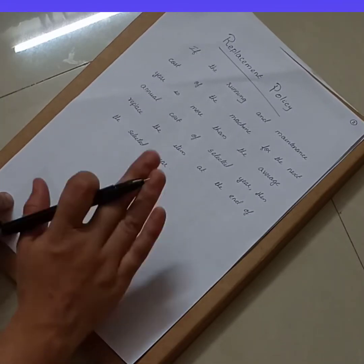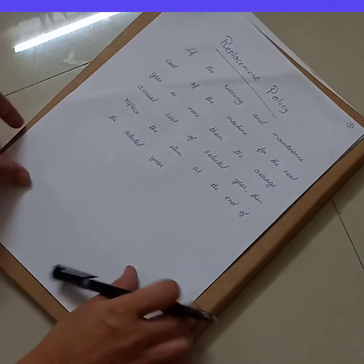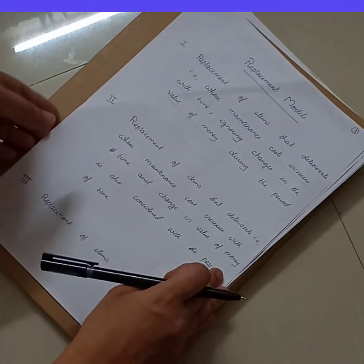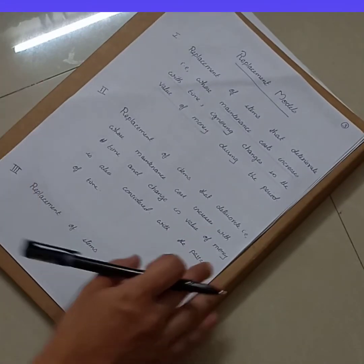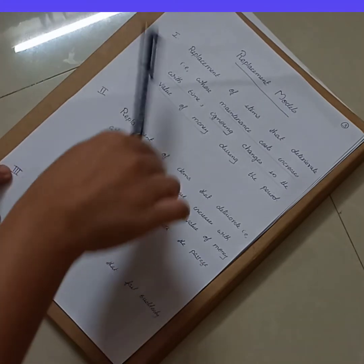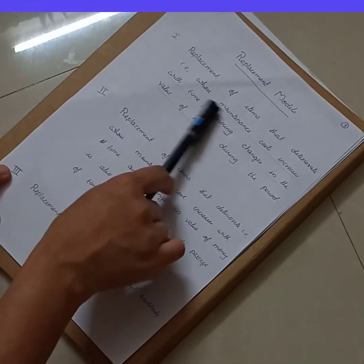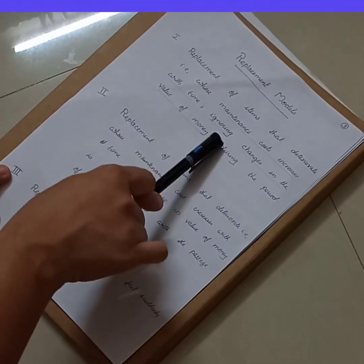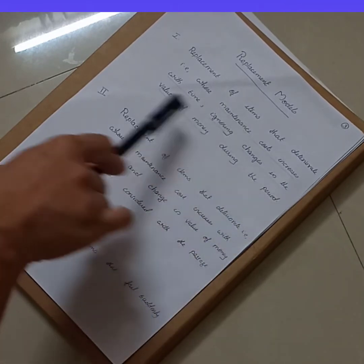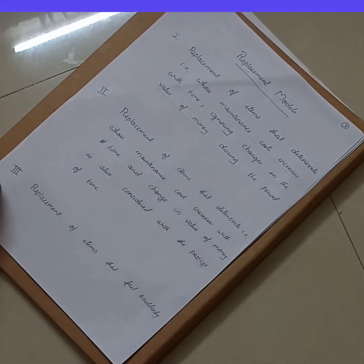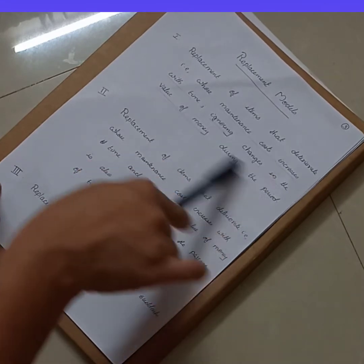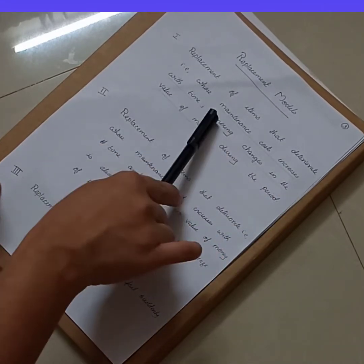I will explain the replacement policy with the help of an example. First, let's see the different types of replacement models. The first model is replacement of items that deteriorate — that is, whose maintenance cost increases with time — but here we ignore changes in the value of money during the period. We are only talking about the maintenance cost of that particular item, which increases with time; the value of money is not considered.